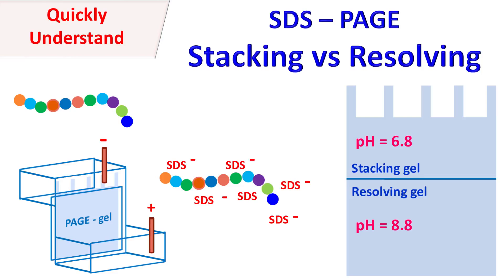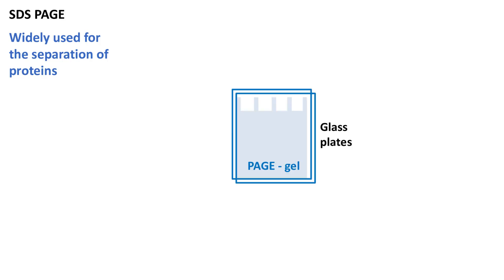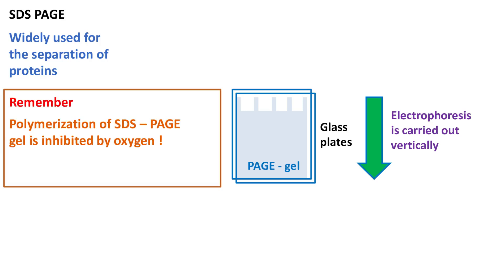Quick biochemistry basics here — let's talk about the rule of stacking and resolving gel in SDS-PAGE. SDS-PAGE is widely used for the separation of proteins. Here, electrophoresis is carried out in a vertical unit. The polymerization of SDS-PAGE gel is inhibited by the presence of oxygen, so the polymerization reaction is carried out between two closely spaced glass plates. This minimizes interference of atmospheric oxygen during the polymerization process.